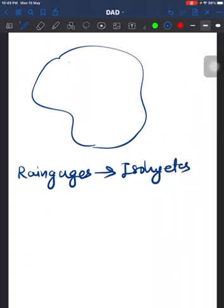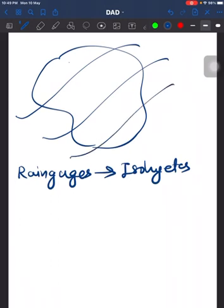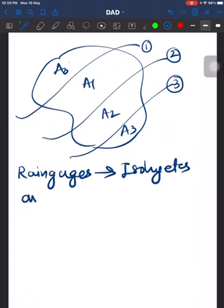Isohyets are basically lines of equal precipitation. We have isohyet number one, two, three, and there are areas in between the isohyets like A1, A2, A3, and A0. We take the average of isohyets one and two.